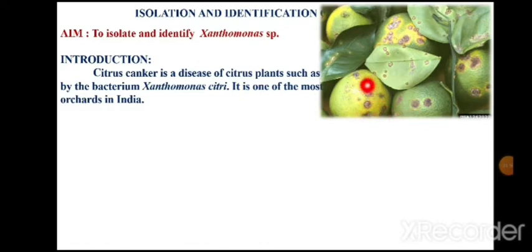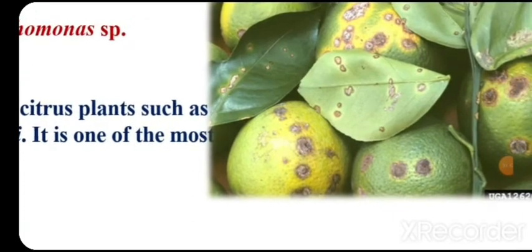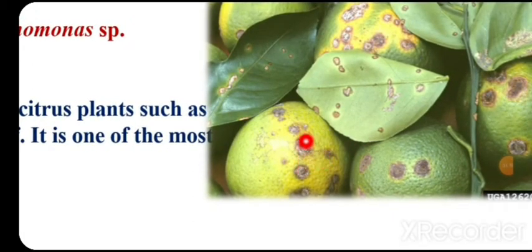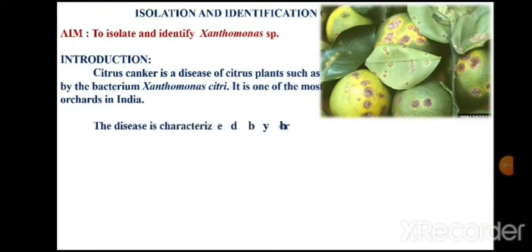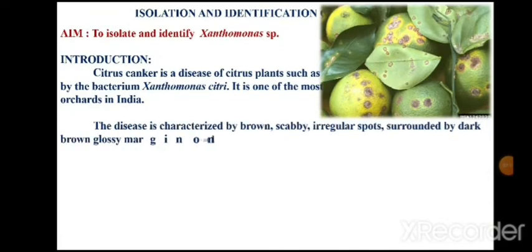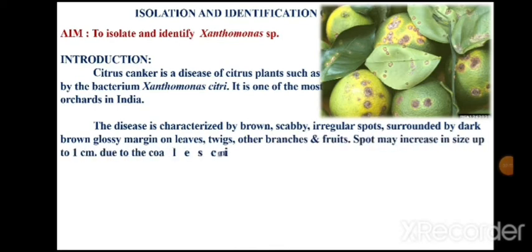You can see the development of lesions, which can be seen on fruit surfaces on the rind as well as on leaves. We can isolate this pathogen from these infected lesions, either from leaves or from fruits. This disease, as you can see in the picture, is characterized by brown, scabby, irregular spots surrounded by dark brown, glossy margins on leaves, twigs, and branches as well as on fruits. Spots may increase in size up to one centimeter due to coalescing of smaller lesions.